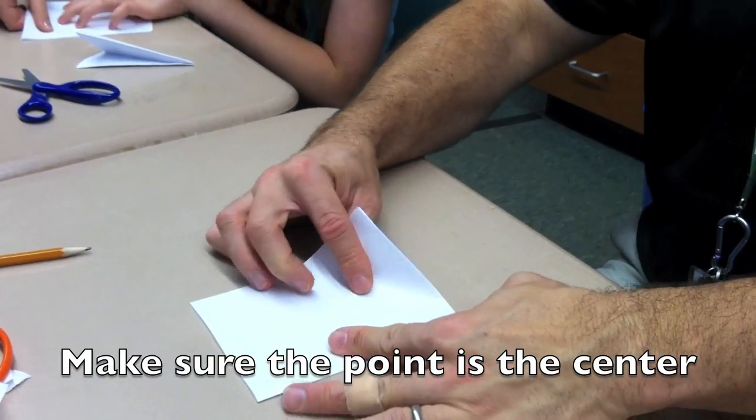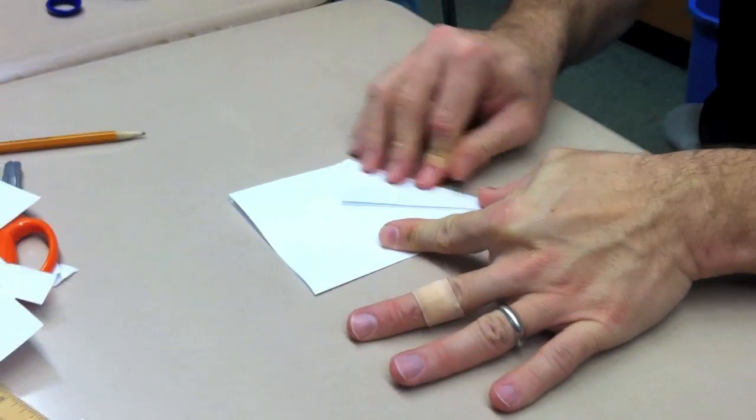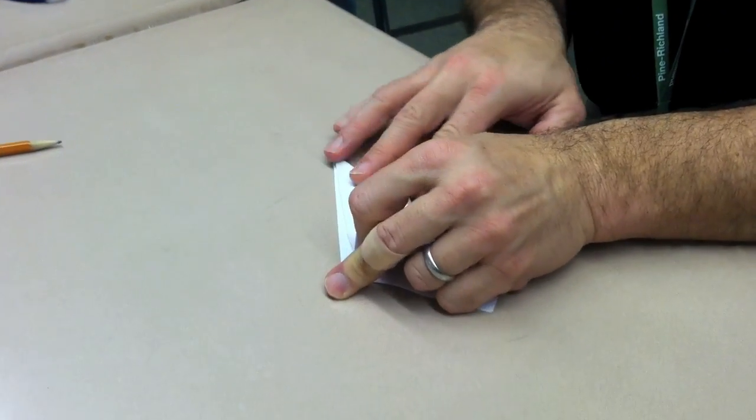Crease it nice and tight, and then fold it into thirds. You'll make three triangles. It will look somewhat like a snow cone or ice cream cone at this point.